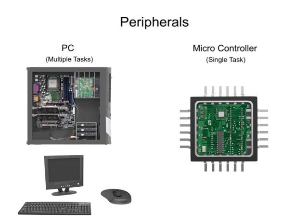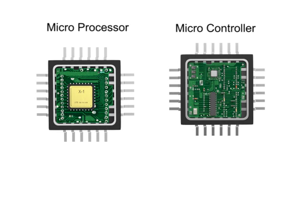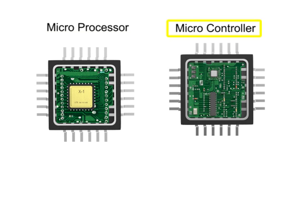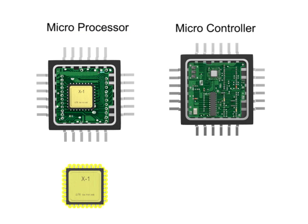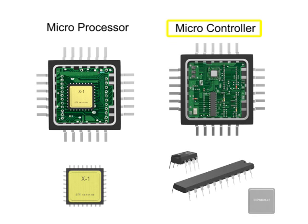Although physically they may look the same, microcontrollers should not be confused with another similar piece of microtechnology, the microprocessor. Both have powerful processing capabilities. However, while the microprocessor has digital processing functionality, it does not have the same built-in capabilities of a microcontroller. A microprocessor only integrates a central processing unit onto a single microchip, whereas a microcontroller incorporates the components of an entire computer.